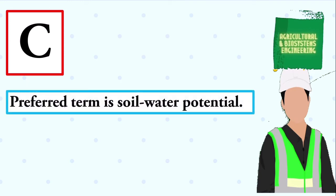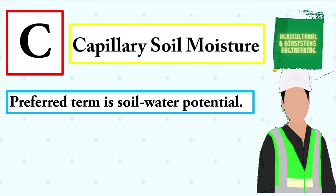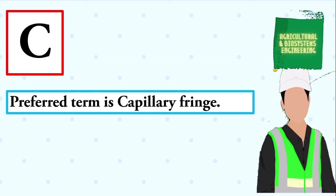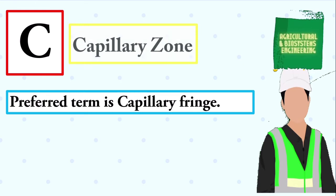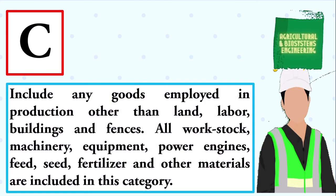Preferred term is soil water potential. The answer is capillary soil moisture. Preferred term is capillary fringe. The answer is capillary zone. Include any goods employed in production other than land, labor, buildings and fences — all work stock, machinery, equipment, power engines, feed, seed, fertilizer and other materials. The answer is capital.